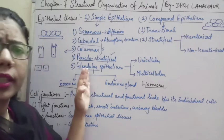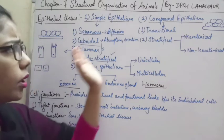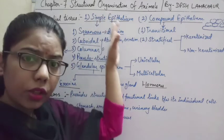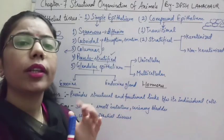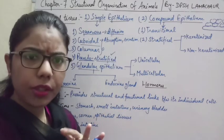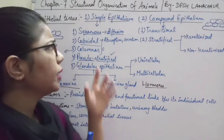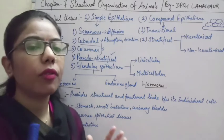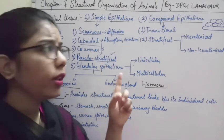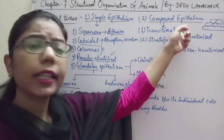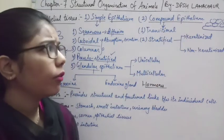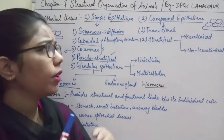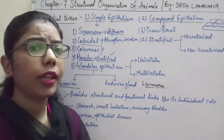The functions of simple epithelium are exchange, absorption, and secretion — but it does not provide protection because it has only a single layer of cells. Compound epithelium, having multiple layers, provides more protection. Its multiple cell layers also help in healing scars more easily.